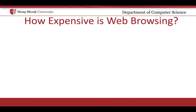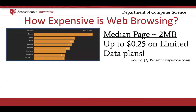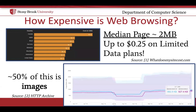First off, why do we need to save users' data and how bad can data costs from web browsing really be? Evidence from analyses in the HTTP archive suggest quite severe. WhatDoesMySiteCost.com compares the size of pages relative to the average limited data plan costs across various countries. Their studies show that the median web page now costs over 25 cents US to load in Canada, a statistic that is only trending upward. Dissecting these pages further through the HTTP archive reveals that approximately 50% of the data costs on pages comes from images.